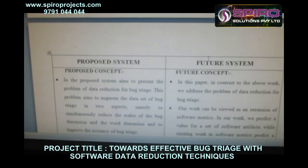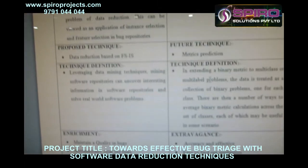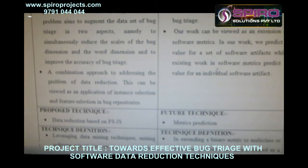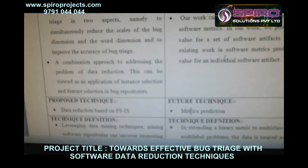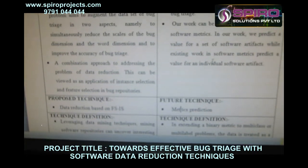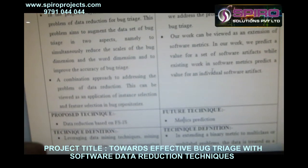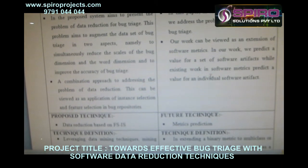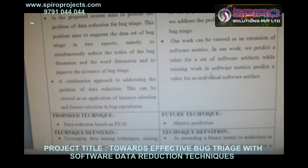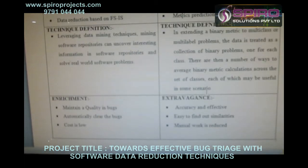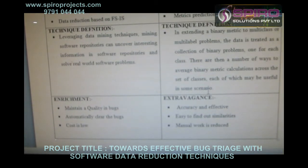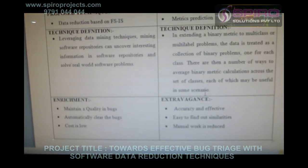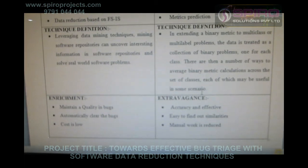In the feature enhancement, we are using metric prediction. We predict whether a thread is loading or unloading, executing line by line. If any exception arises, it is directly shown with the help of metric prediction. The main advantage of the feature enhancement is accuracy, effectiveness, easy identification of similarities, and manual work is totally reduced.